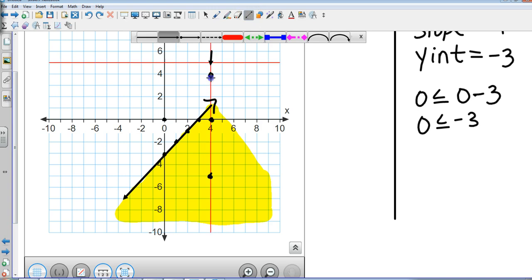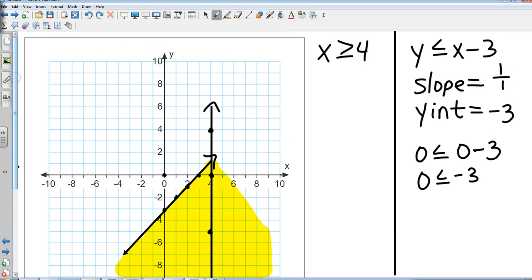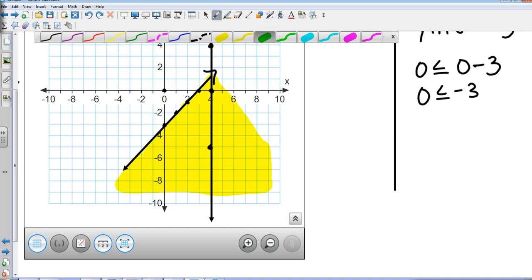Now here's the difference: I don't have to substitute a point for this one, because greater than, when you have a vertical line, think of your number line. Is greater than on the number line going to be to the right or to the left? Obviously greater than on a number line is going to go to the right. So I'm going to get a different color and I'm going to shade to the right of this line.